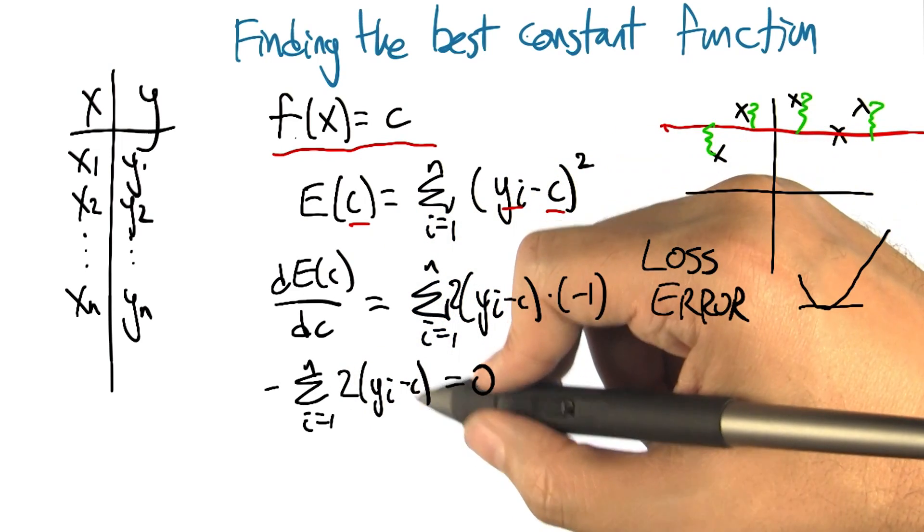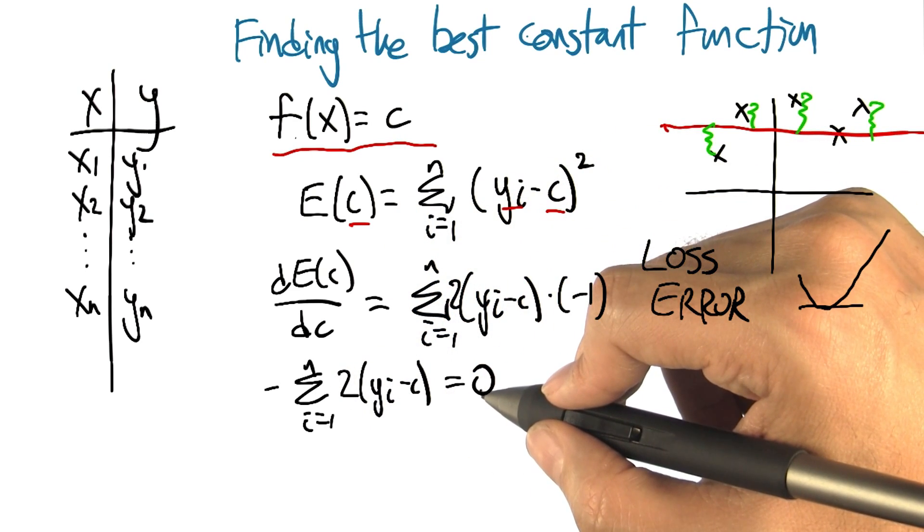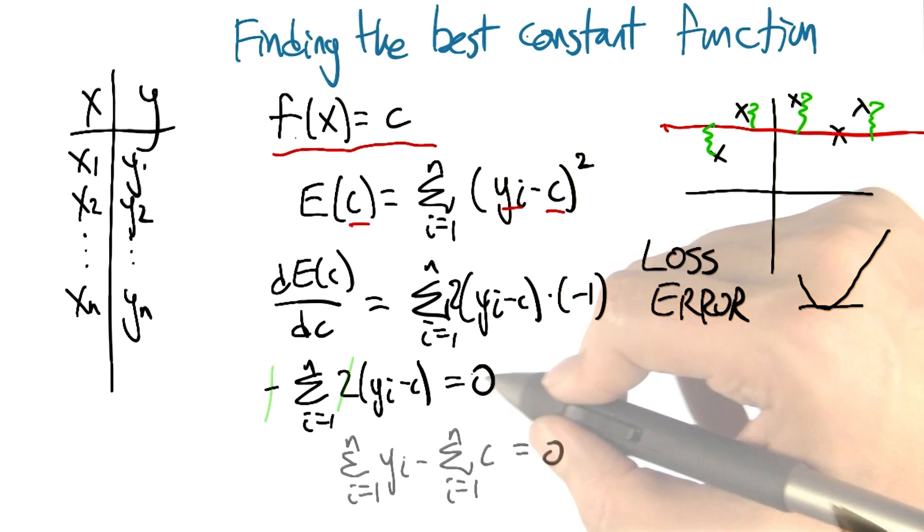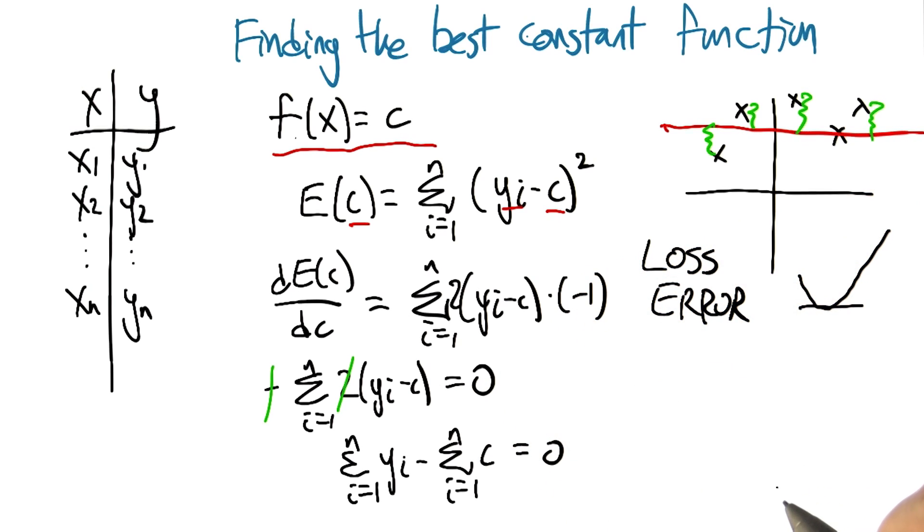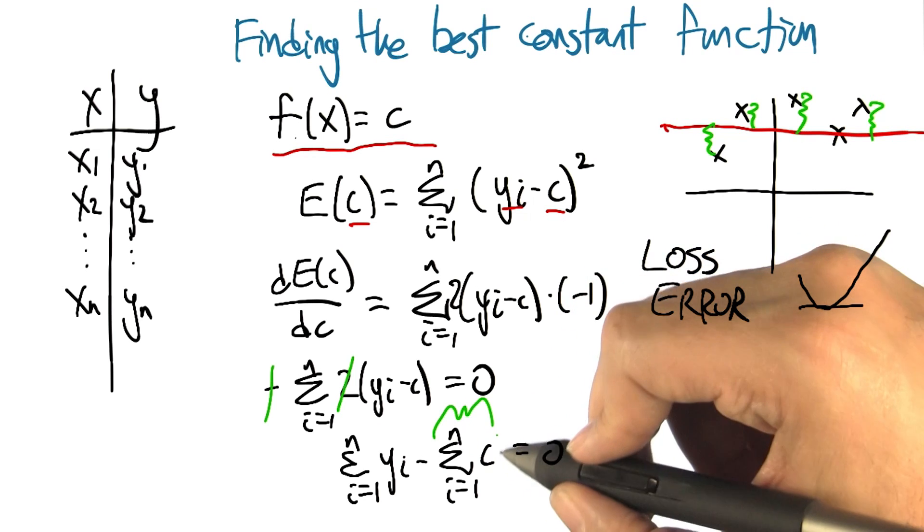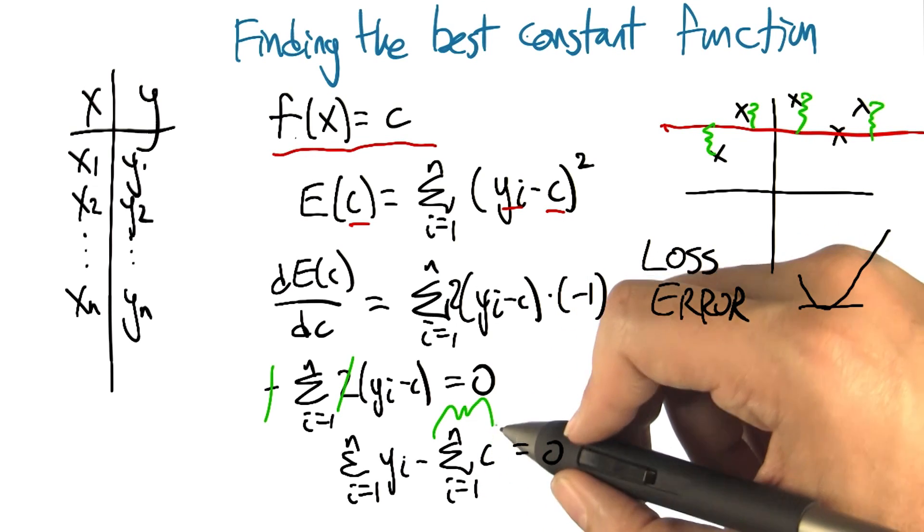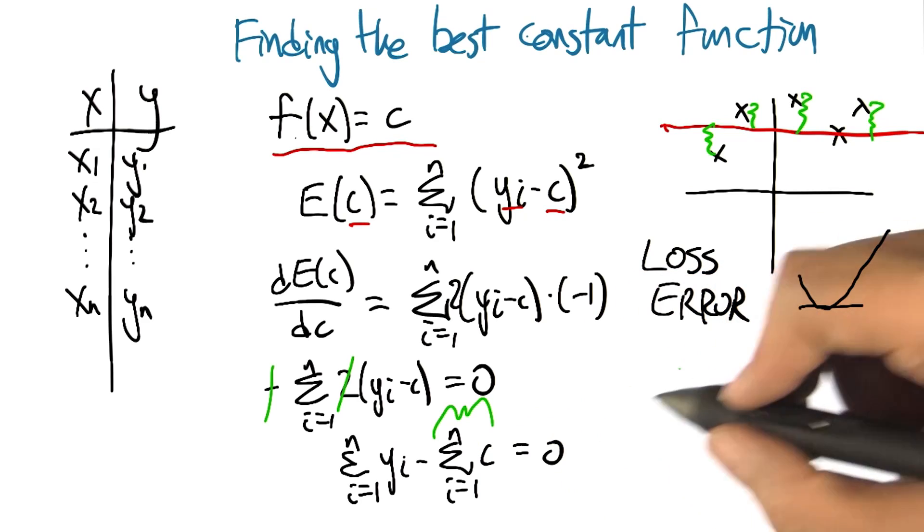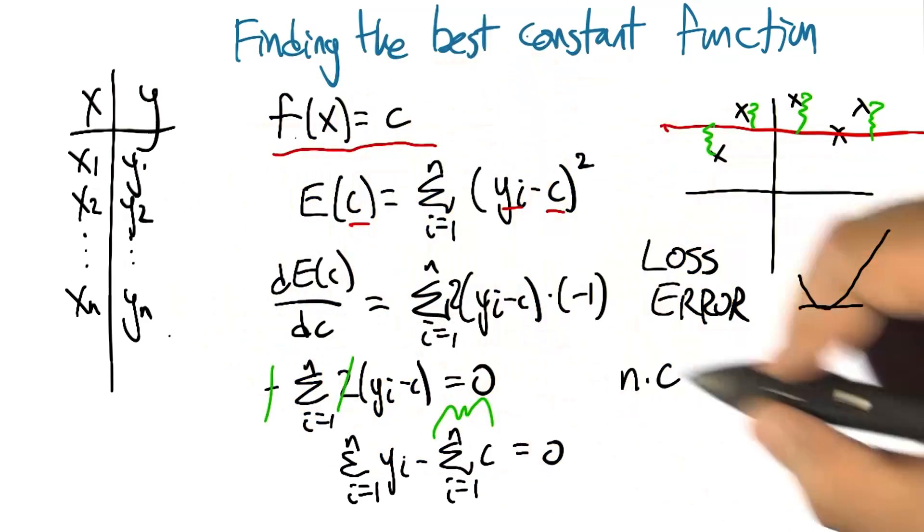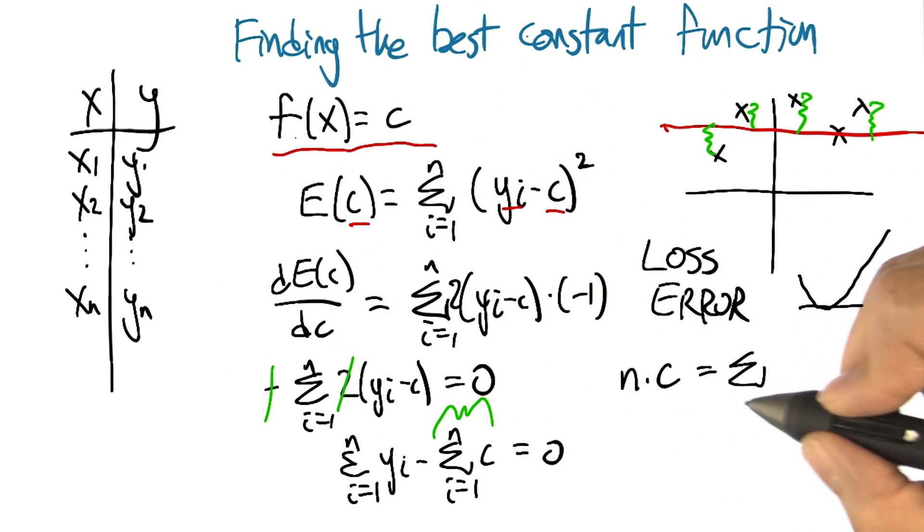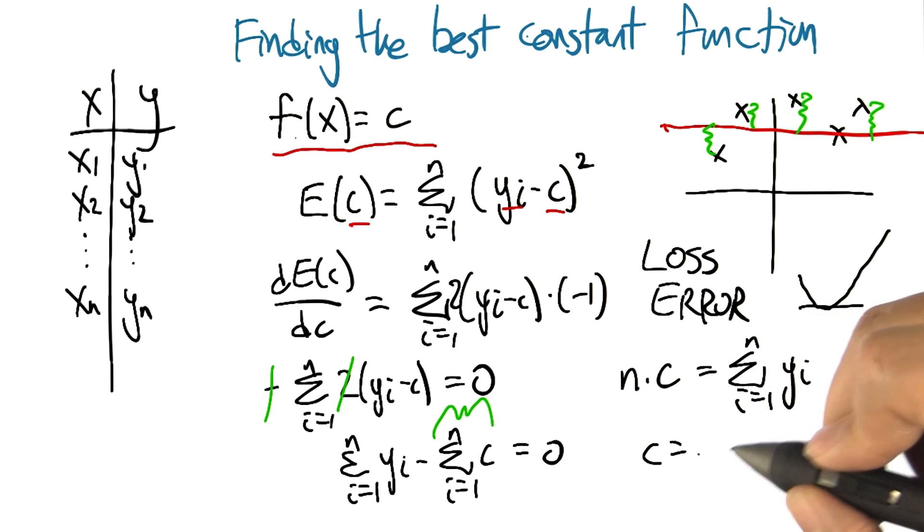All right, so now we just need to solve this equation for c. So we have one equation and one unknown. So that gets us this. But this quantity, it's just the constant added to itself n times, so it's n times c. We move that to the other side. We get n times c. n is the number of data points, as you recall. Is the sum of the yi's. We divide through by n, and what do we see?